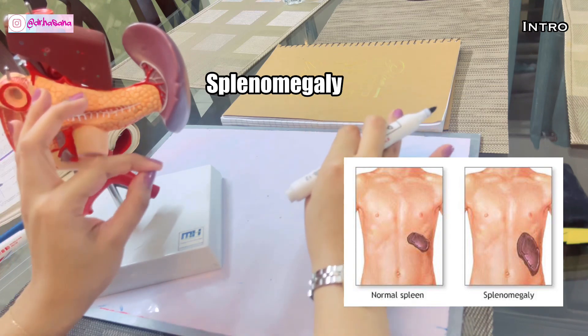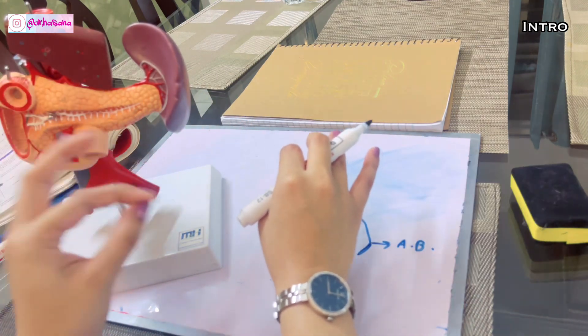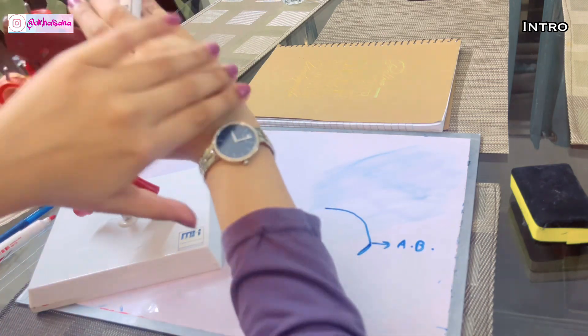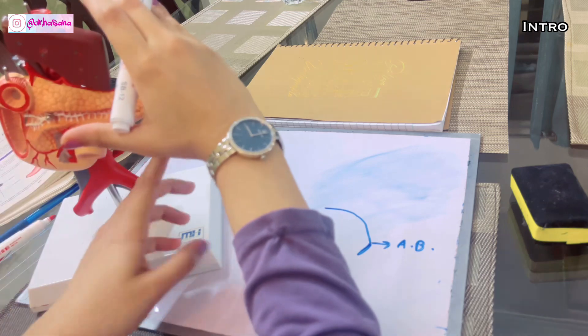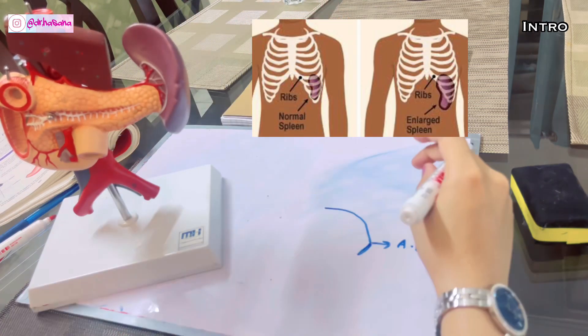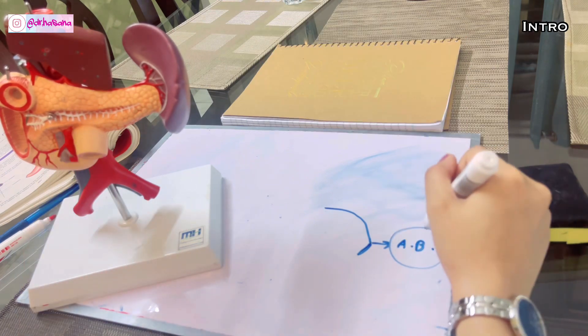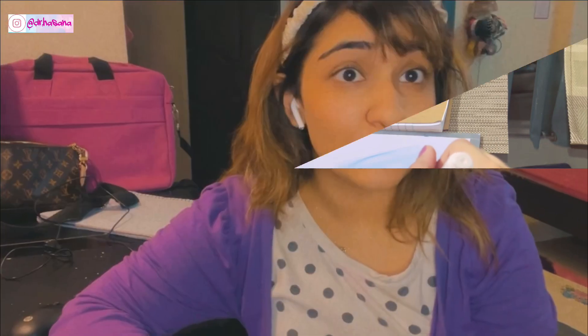You can only palpate spleen if it has enlarged, which is known as splenomegaly. If the splenomegaly is twice of its original size, only then you can palpate the spleen because it's hidden under the costal margin. The first thing you palpate is this anterosuperior angle. Therefore, this is known as the clinical angle of the spleen.